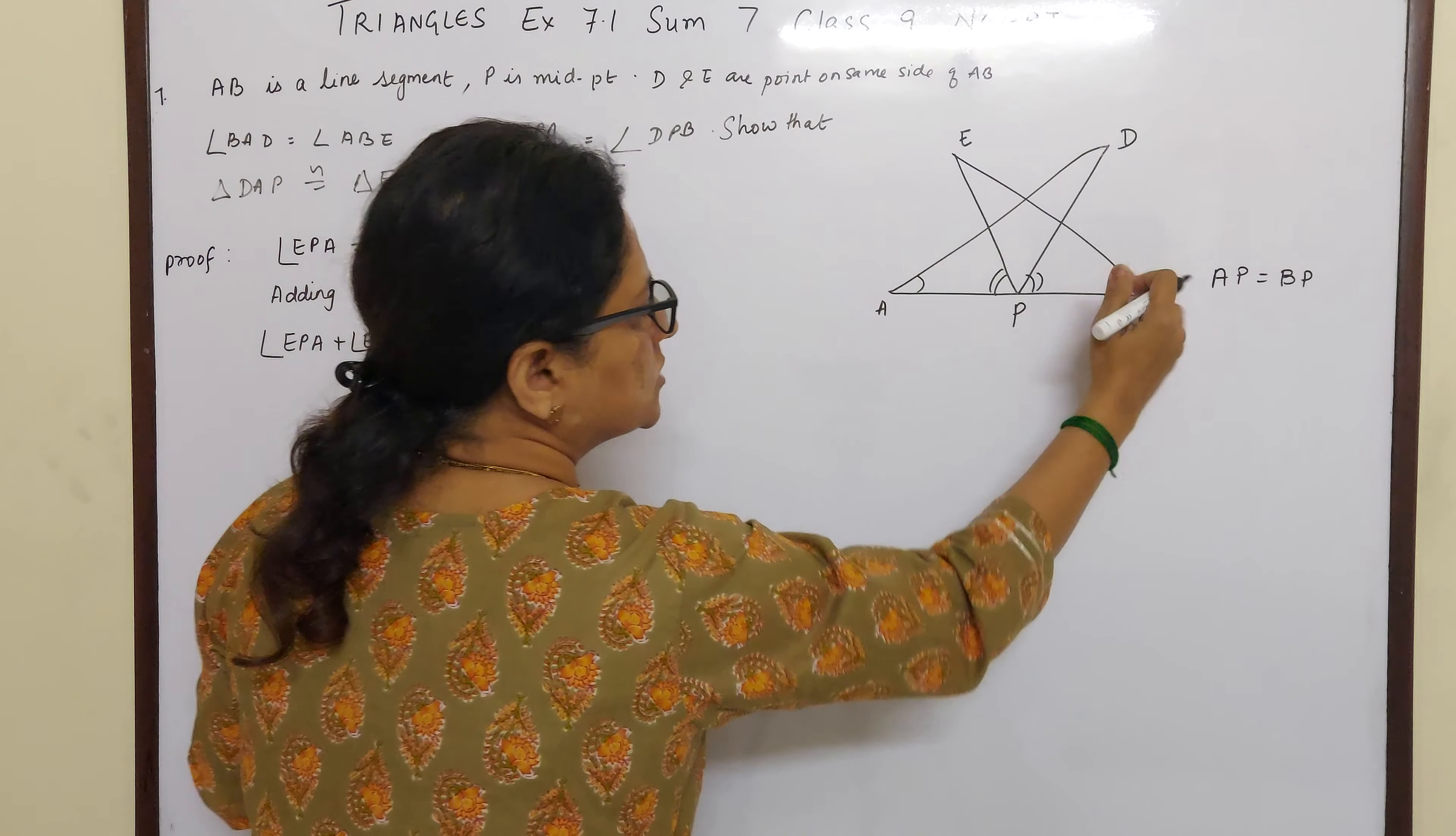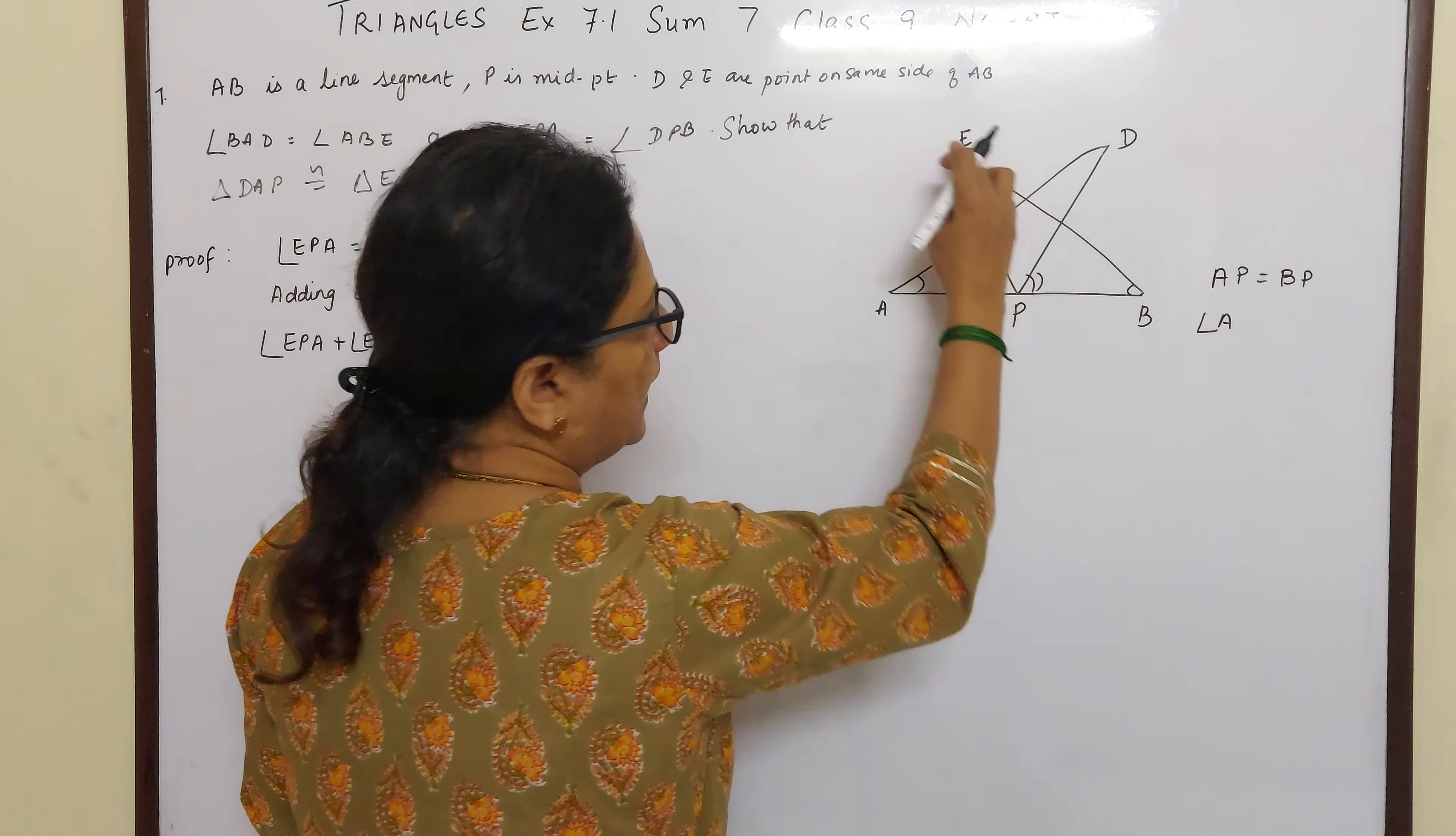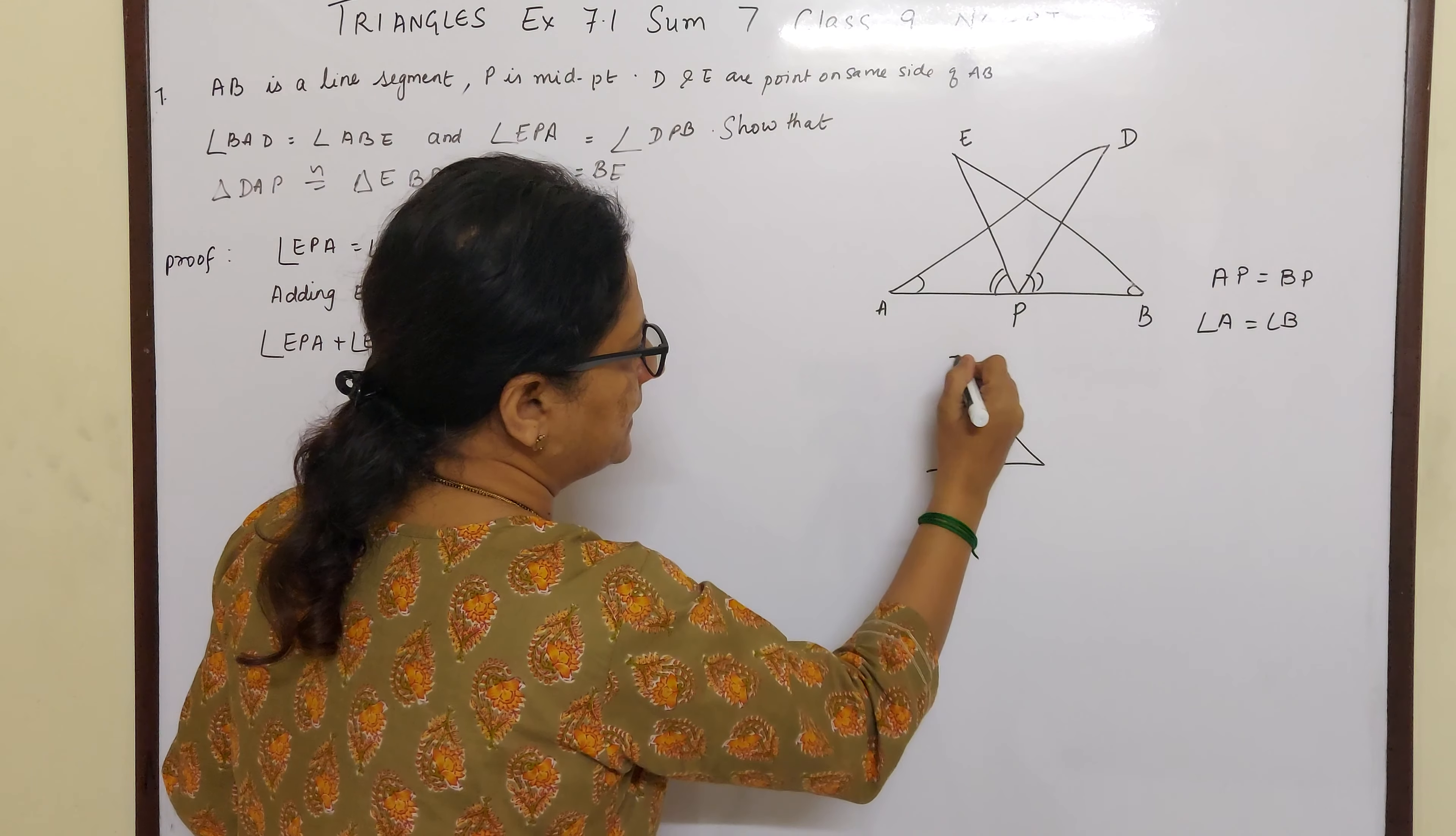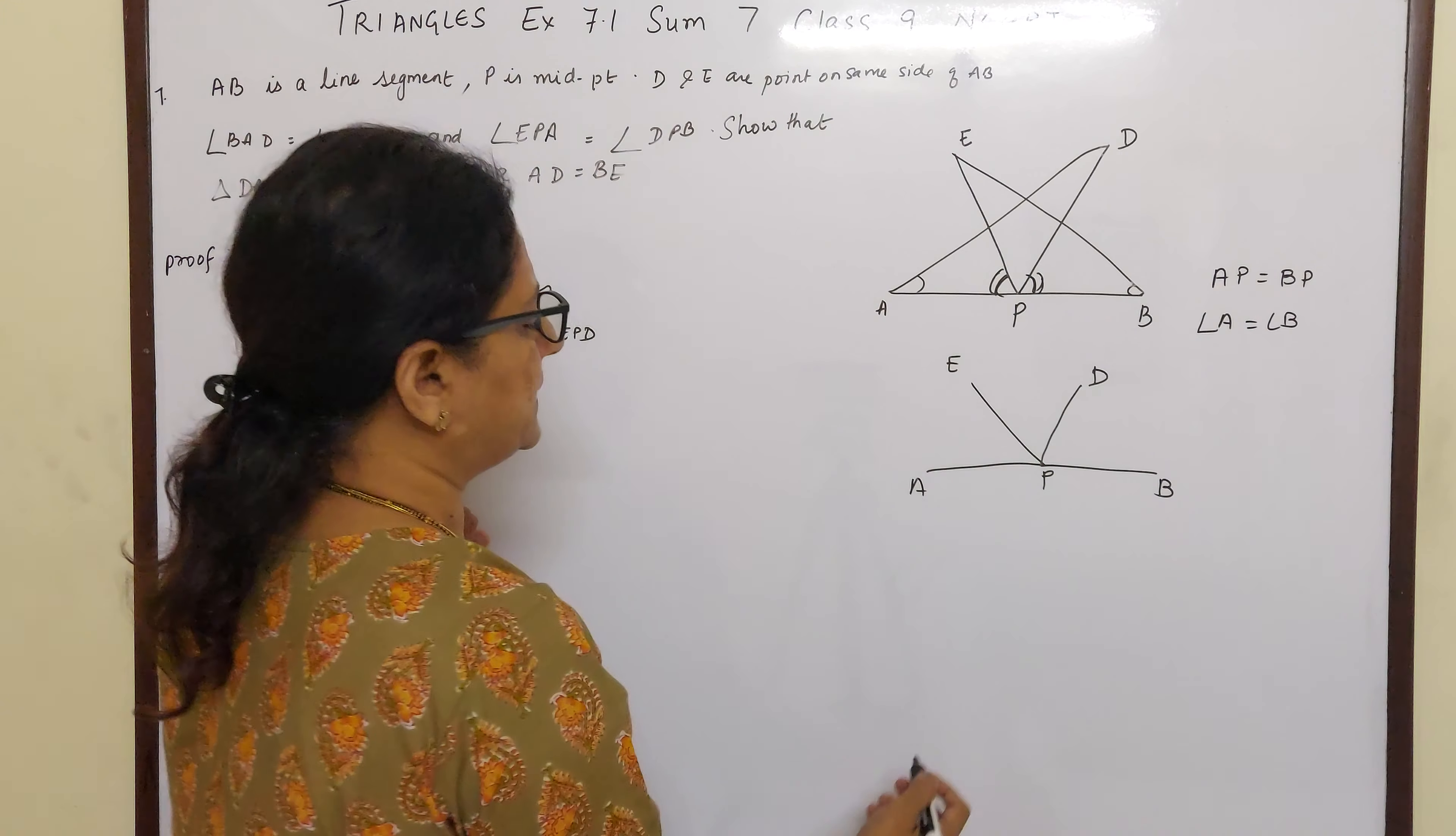Now this is a line alone, so I can say instead of BAD, I can say angle A, and ABE. So I can say angle A is equal to angle B to make it simple. And EPA is equal to DPB. EPA, that is this EPA, is equal to DPB. That is why these two are marked like this. EPA is equal to DPB.